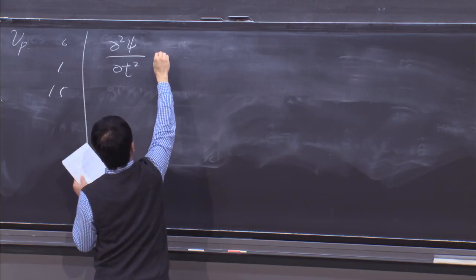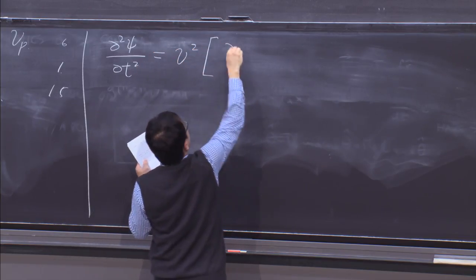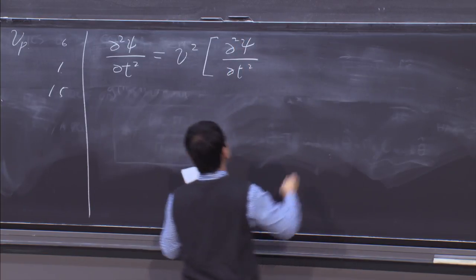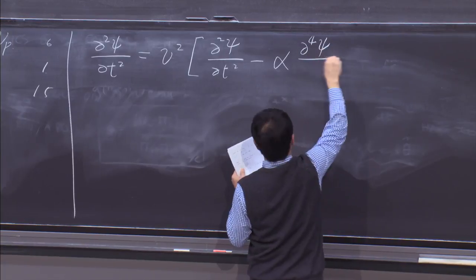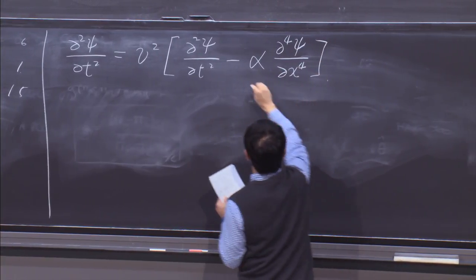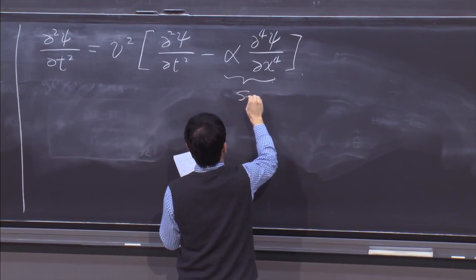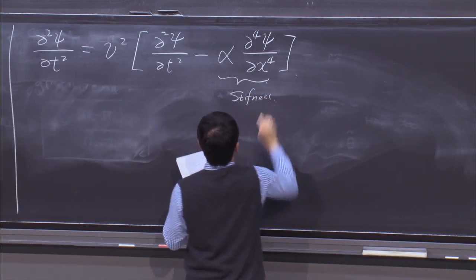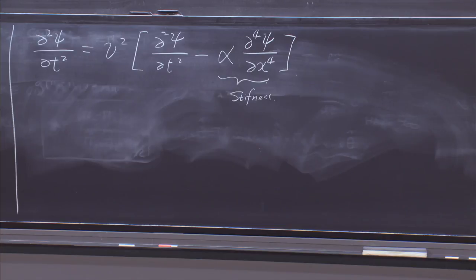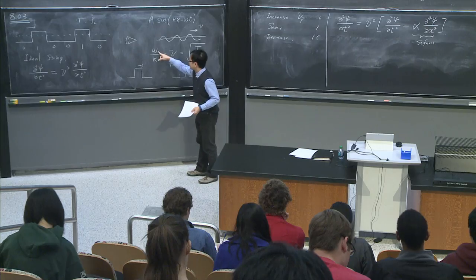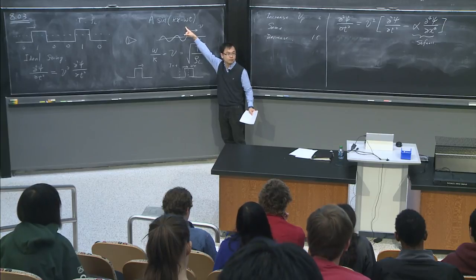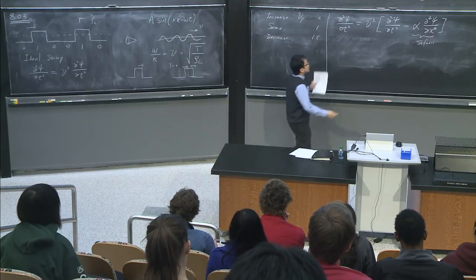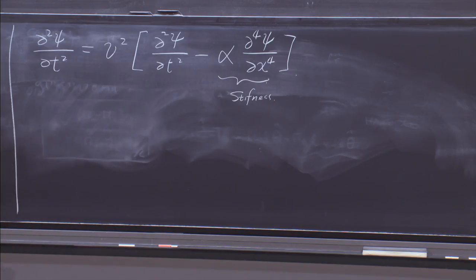I can introduce a semi-realistic model by adding an additional term to the wave equation. The modified equation is: ∂²ψ/∂t² = v² ∂²ψ/∂x² − α ∂⁴ψ/∂x⁴. This additional term proportional to α represents the contribution from stiffness. Now to find the dispersion relation, I plug the progressing wave solution sin(kx − ωt) into this modified equation.